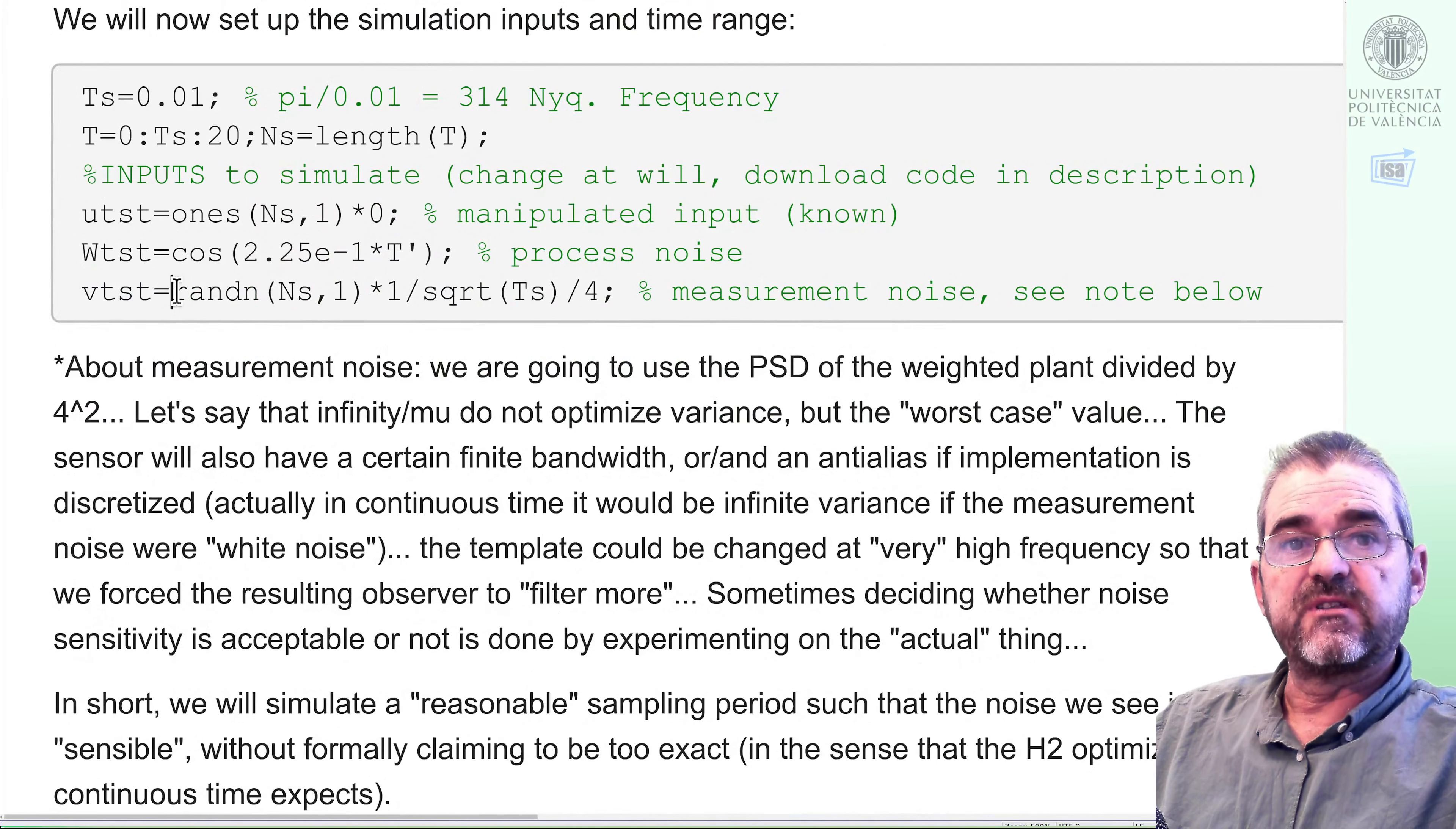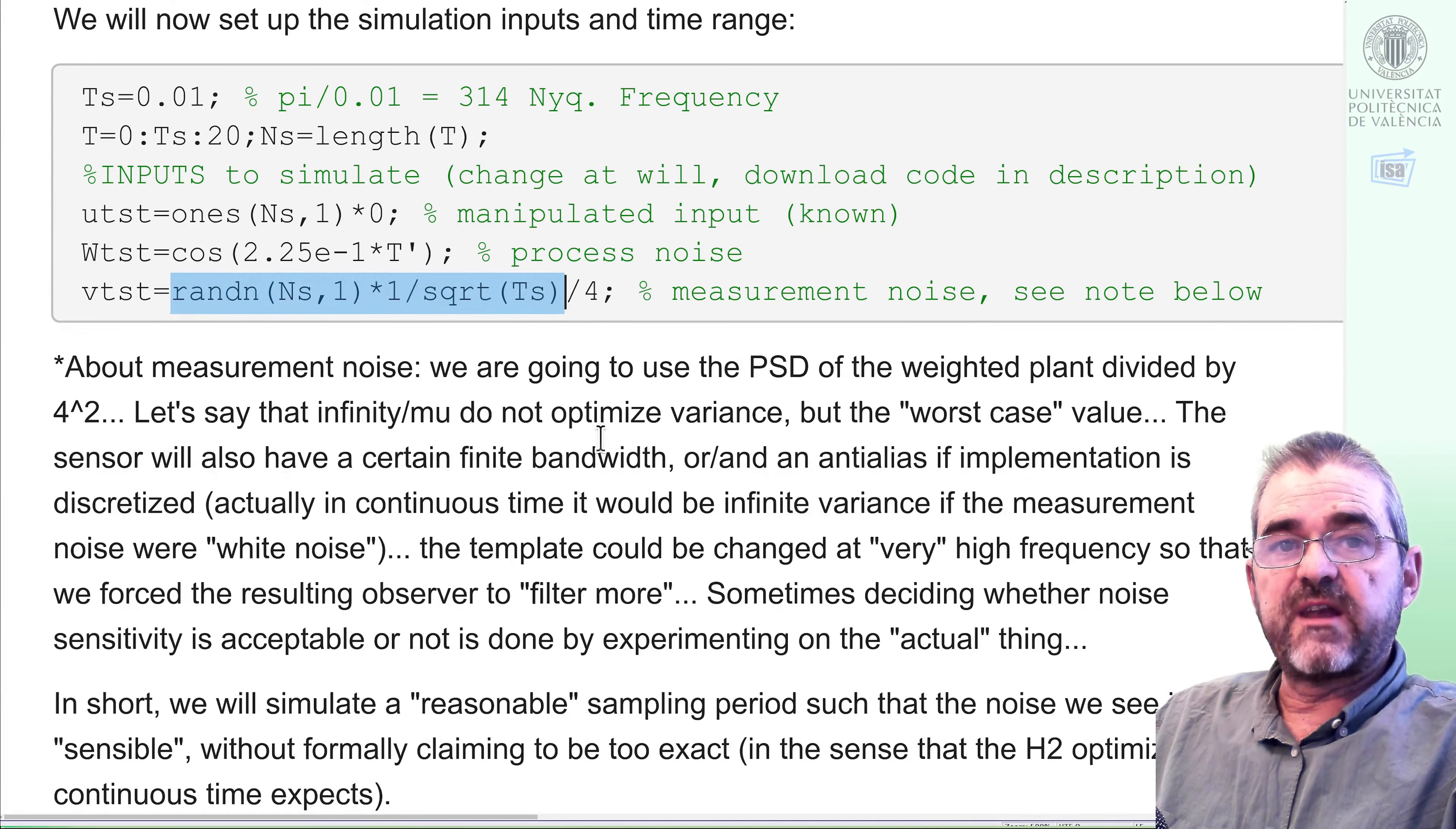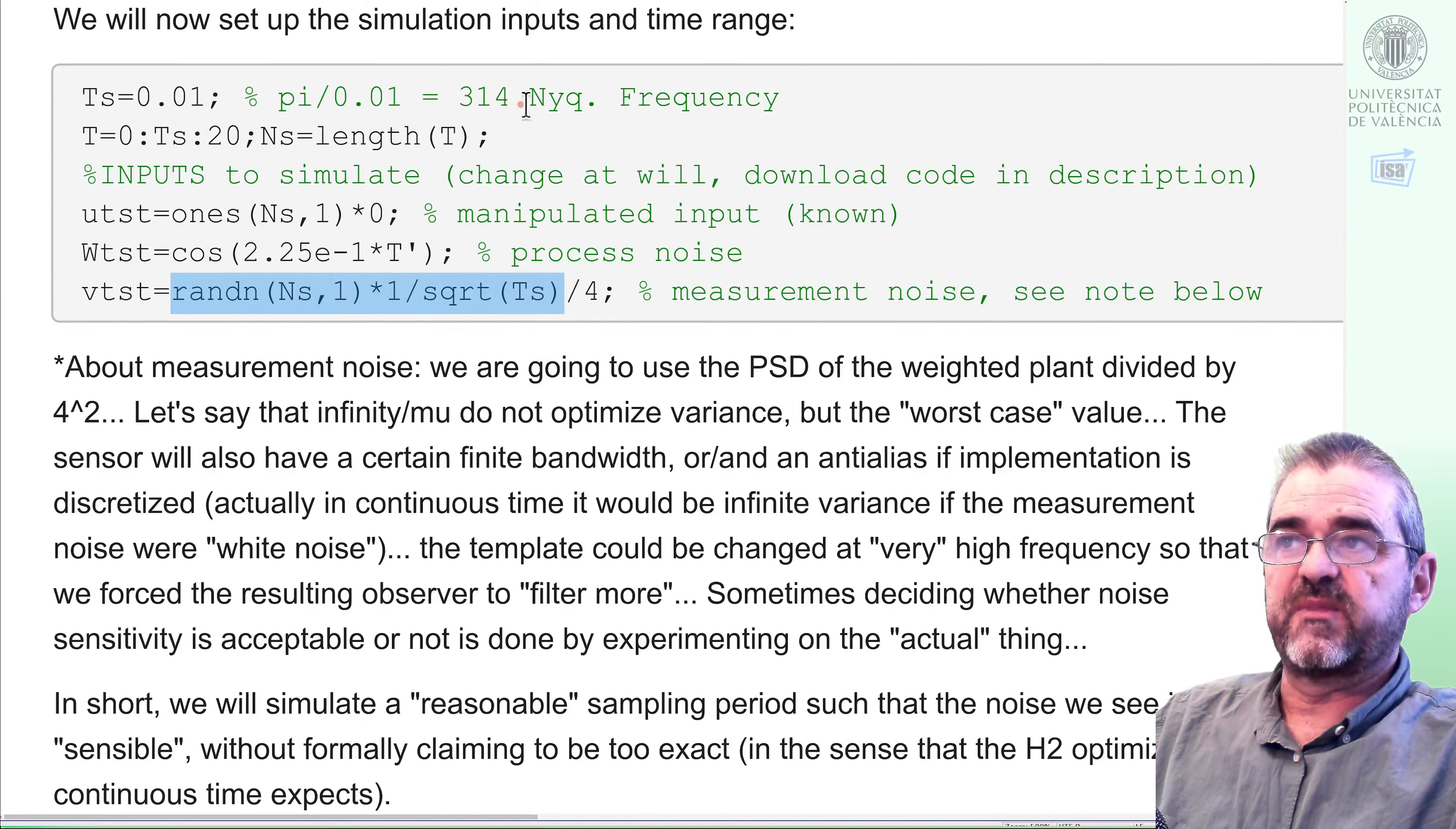Basically, we are carrying out the design in continuous time, so the unit noise in continuous time generalized plants should mean, at least for H2 stuff, a white noise with infinite bandwidth, power spectral density 1 at all frequencies. But that thing cannot be simulated, it's an idealistic stuff that has infinite variance and changes infinitely fast. However, real signals are band limited. So simulation theory tells me that power spectral density 1 up to this Nyquist frequency should be simulated with a random noise with standard deviation 1 over the square root of sampling time, and of course that simulation will not be faithful from that frequency onwards.